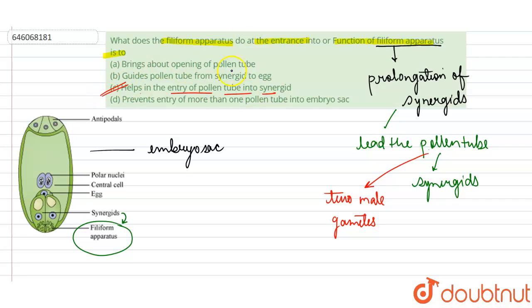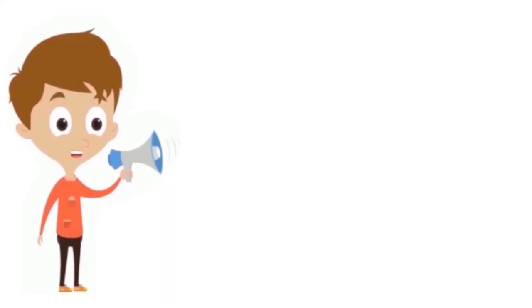Option A: brings about opening of pollen tube - no. Guide pollen tube from synergy to egg - no, that does not guide from synergy to egg. And it does not prevent the entry of more than one pollen tube. So option C will be the correct option here.